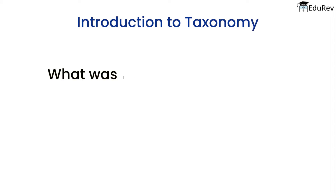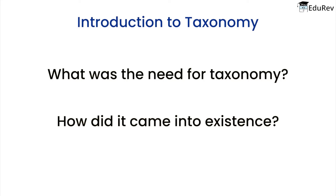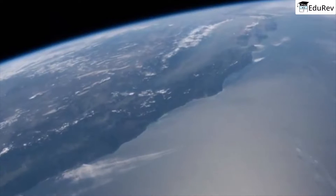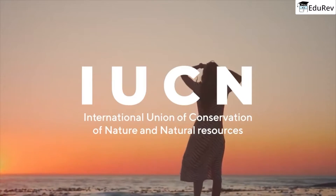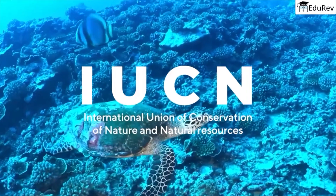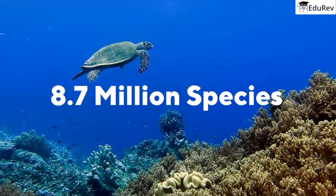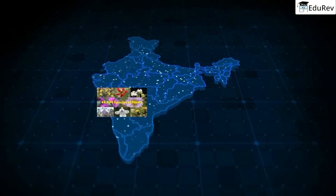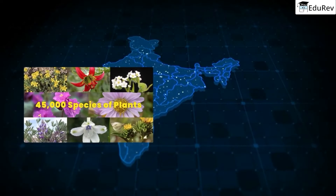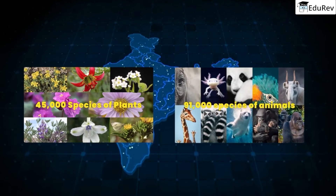In this video, we will learn about what was the need for taxonomy and how it came into existence. According to the data from IUCN, International Union of Conservation of Nature and Natural Resources, it came out that 8.7 million species are there on the entire earth. In the Indian system, there are 45,000 species of plants and 91,000 species of animals.